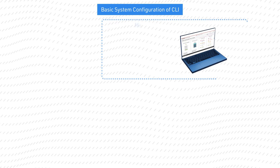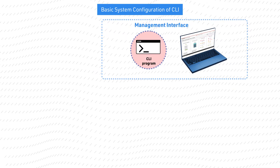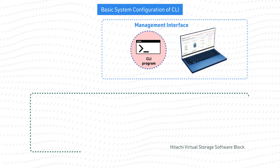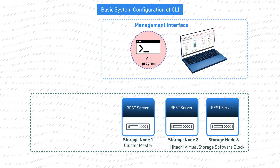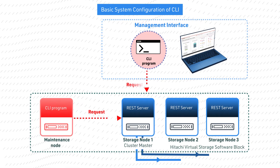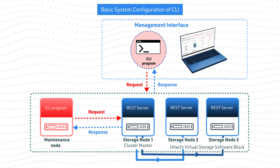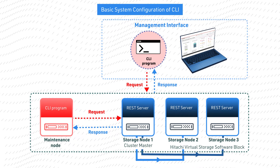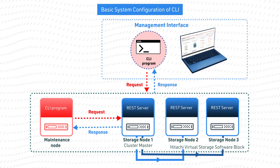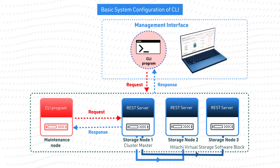Now let's look at how to manage a VSS Block cluster using the CLI option. The CLI program must first be installed on the controller node. The CLI program converts CLI commands entered from either the controller node or the maintenance node into REST API requests, and then sends them to the cluster main storage node to run operations for the storage cluster, similarly to the GUI.